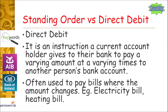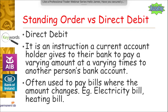For example, if you use more electricity in the winter than in the summer because it's darker in winter, the amount can change in each bill. The time can also change slightly — the bill may not be due on the first day of every month, but can be due at different times.